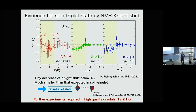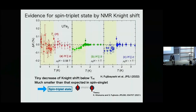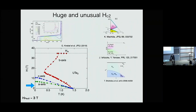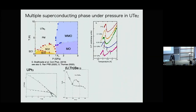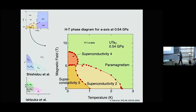When studying the pressure-driven phase diagram with four superconducting states — are these all spin triplets? Experimentally, we don't know in fact. We don't know what the order parameter is between these phases. Theoretically it is proposed, but I cannot say experimentally.